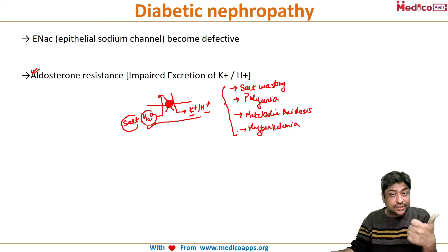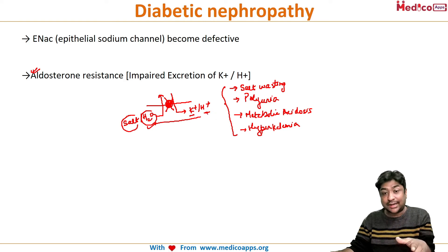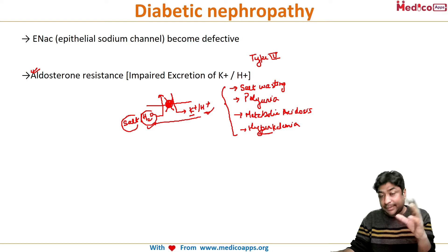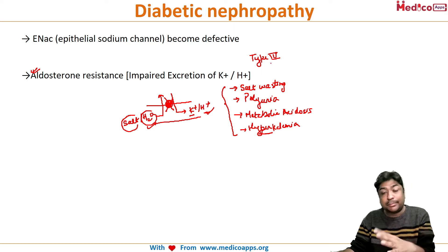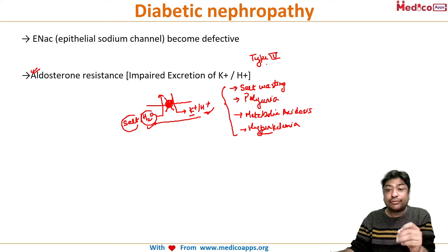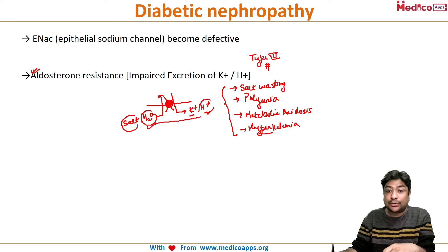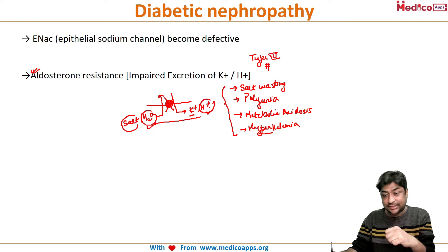To summarize the type 4 RTA findings: there will be salt wasting, polyuria, metabolic acidosis because hydrogen ion is not being excreted, and hyperkalemia. This is type 4 renal tubular acidosis. There will be a separate lecture on different types of RTAs, but in diabetic nephropathy specifically, type 4 RTA occurs because hydrogen ions cannot be pumped out, leading to acidosis.